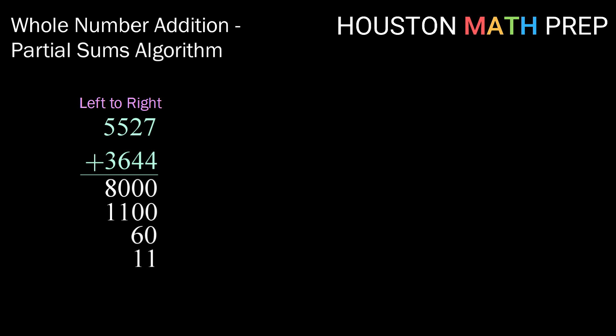And then finally in our ones place, 7 plus 4 is 11. So notice here, there's no carrying, there's no trading, anything like that, we're just writing down our sum. From there, we're going to add all those values up and we have 9,171.